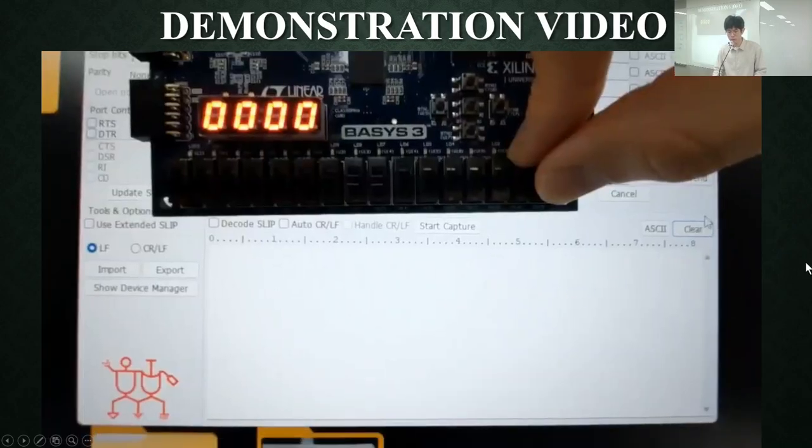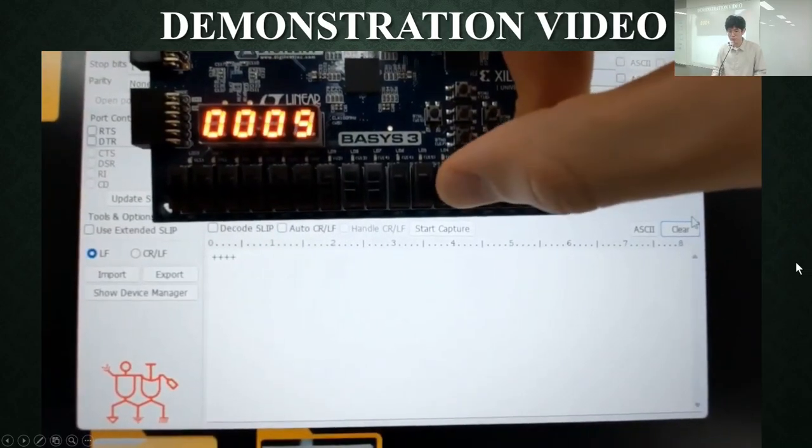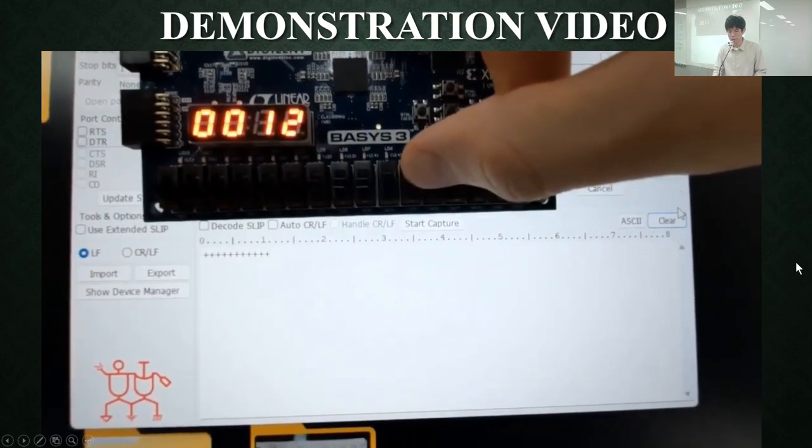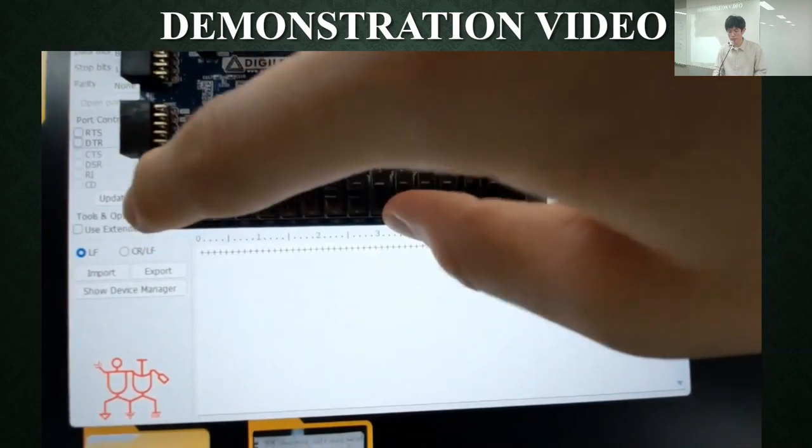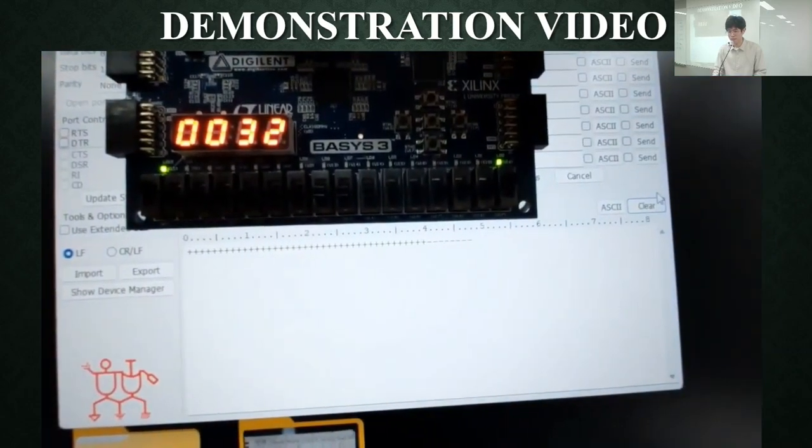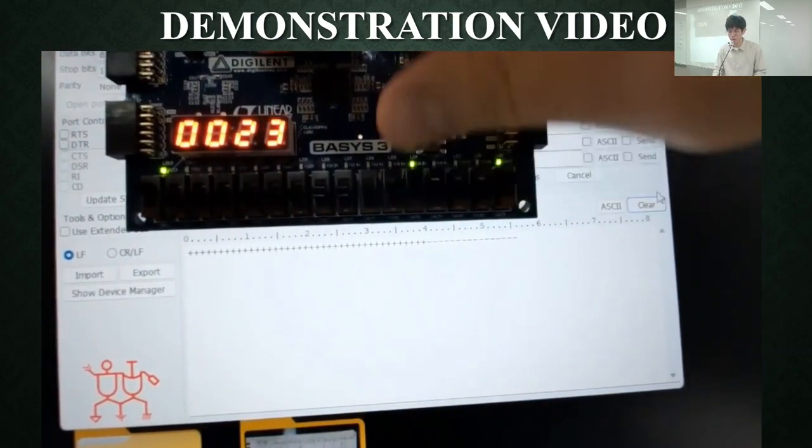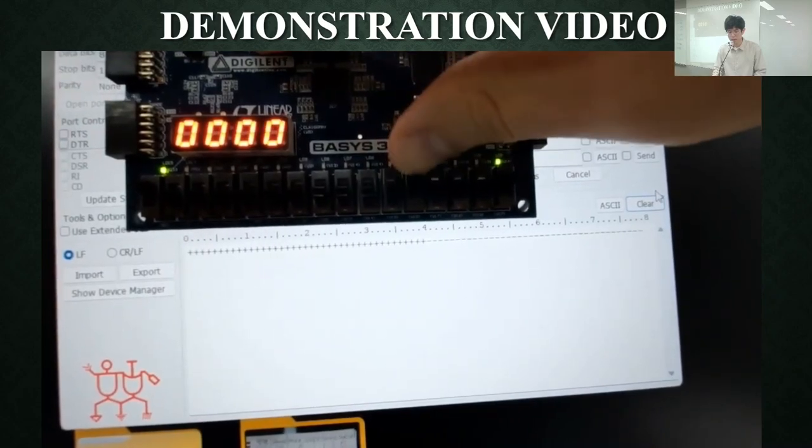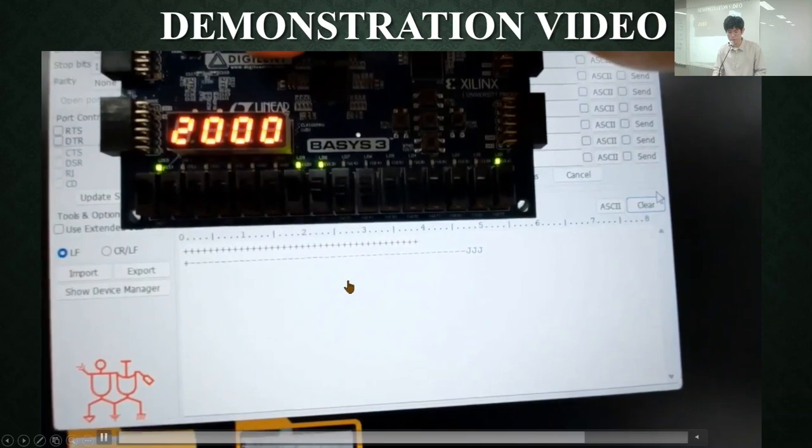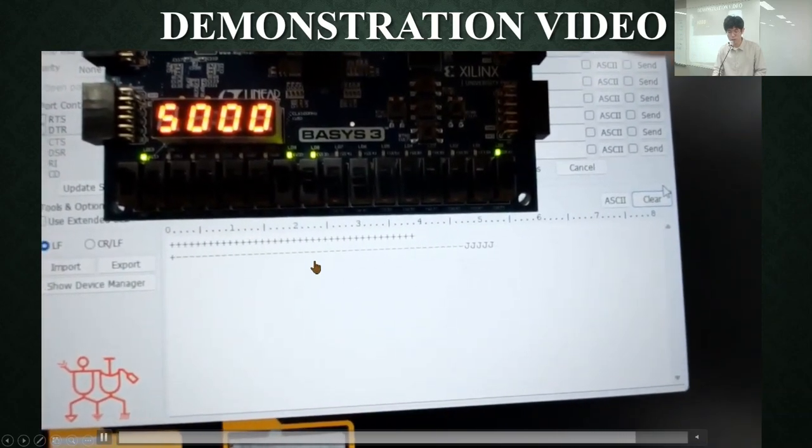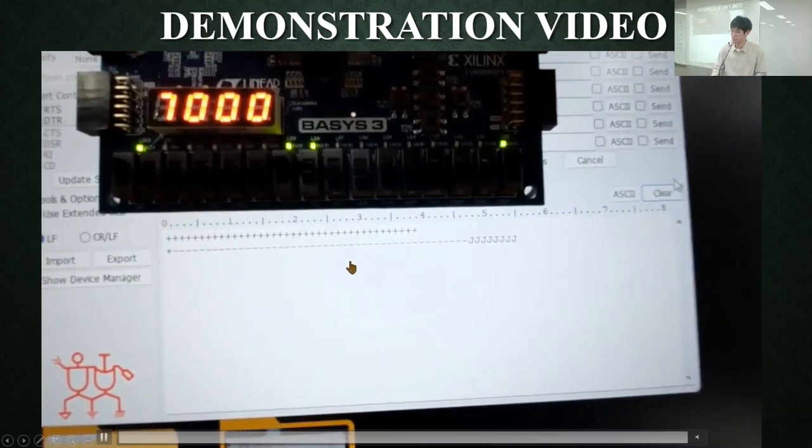This is for the UART. When a number increases by 1, a plus character is displayed on the computer screen. When a number decreases by 1, a minus character is displayed on the screen. This counting speed is applied to the speed in which the minus character is written. And a J character is written when a number jumps by 1000.